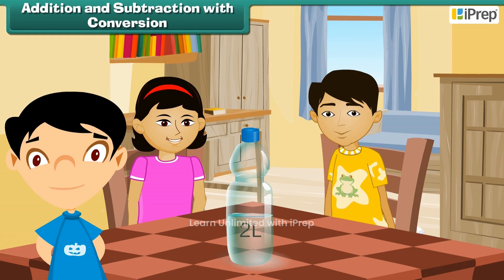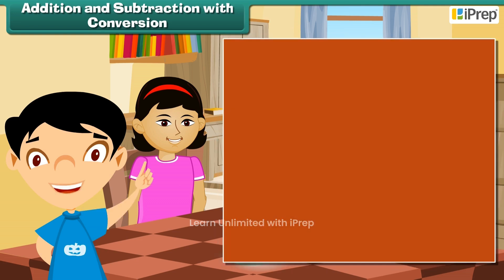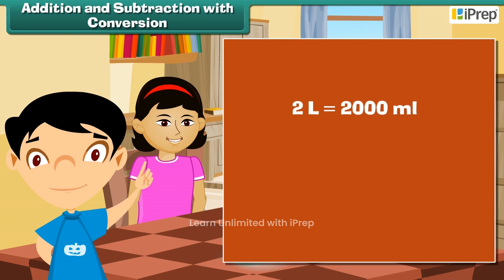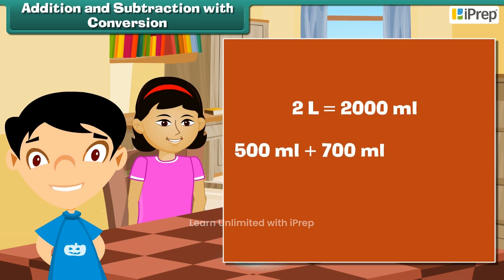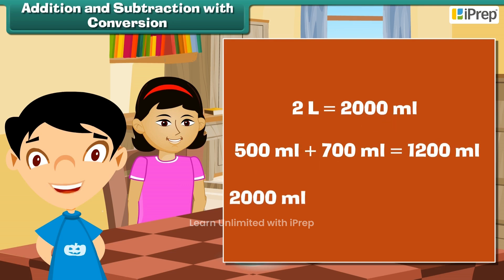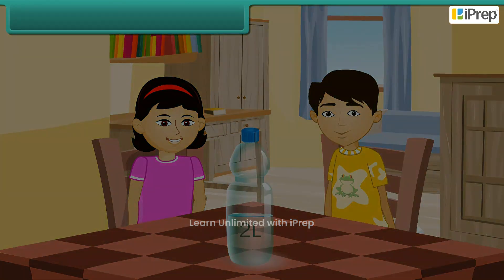Addition and subtraction with conversion: Soha's water bottle holds 2 liters of water. Soha drank 500 milliliters and her friend Govind drank 700 milliliters. Total water in the bottle is 2 liters, which is 2,000 milliliters. Total water consumed is 500 plus 700, which is 1,200 milliliters. Water left in the bottle is 2,000 minus 1,200 milliliters, which equals 800 milliliters.